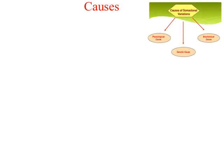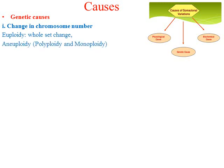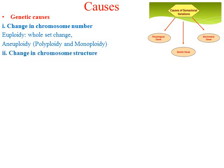The causes of somaclonal variation in plant tissue culture include genetic, physiological, and biochemical causes. Under genetic causes, the first is change in chromosome number. When a whole set of chromosomes changes, we call it polyploidy. When only one or two chromosomes are added or deleted, we call it aneuploidy. That may be polyploidy or monoploidy.